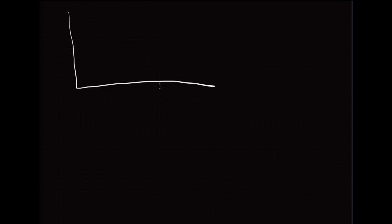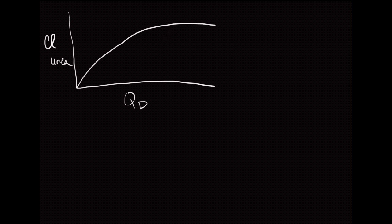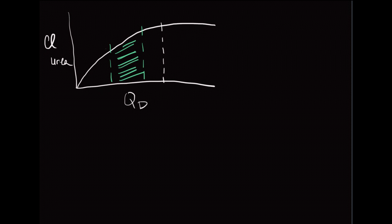Let's look at a graph to explain this further. It's the ratio of dialysate flow rate — or total dialysate volume — to clearance of a substance; we'll choose urea. The graph shows that beyond a certain dialysate flow rate, you achieve no greater urea clearance for every increment in dialysate volume. It also shows that at a certain range of dialysate flow rate, you get optimal urea clearance — that's the highlighted area on the graph.